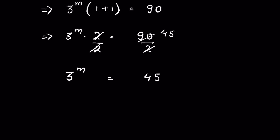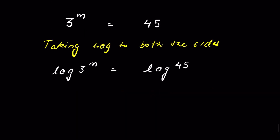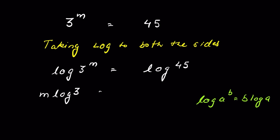Now let's take log of both sides. So it will be log 3 to the power m is equal to log 45. We know log a to the power b is equal to b log a. So this will be m log 3 is equal to log 45.